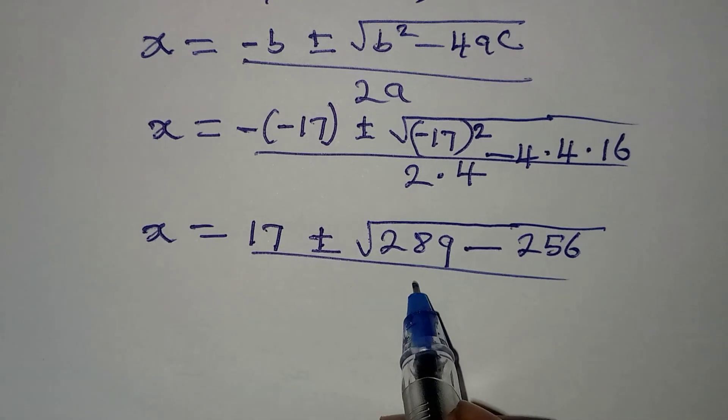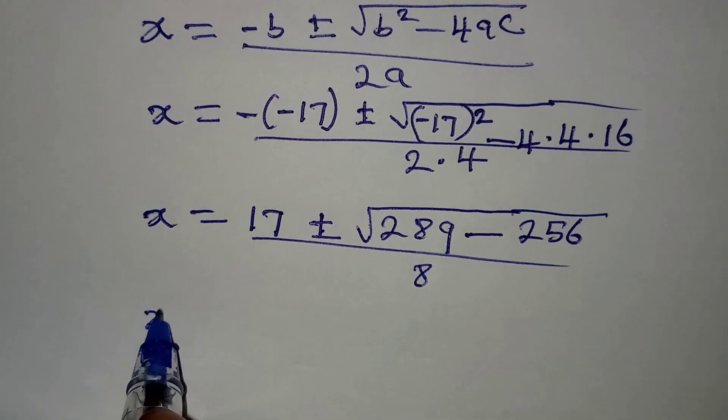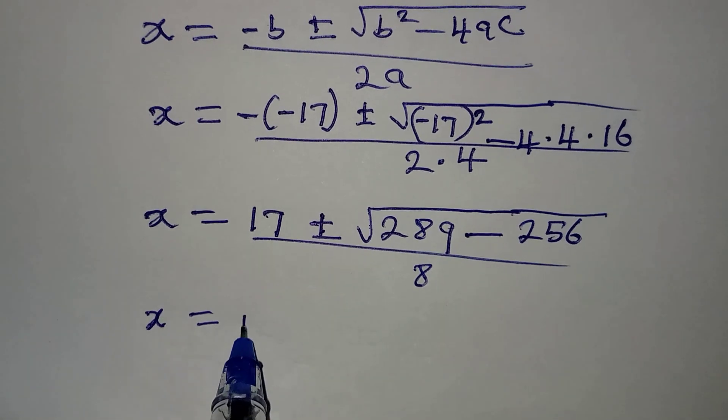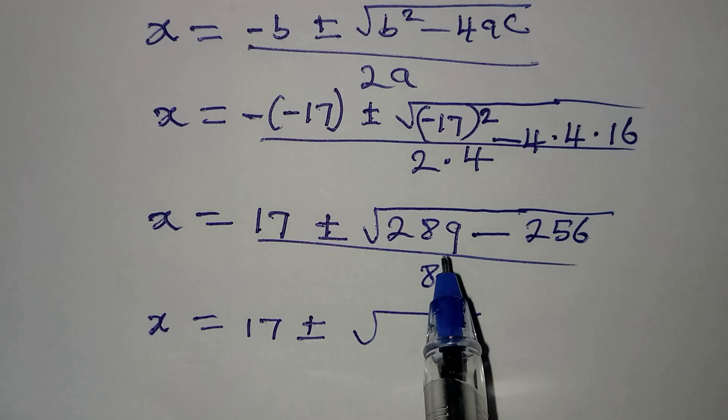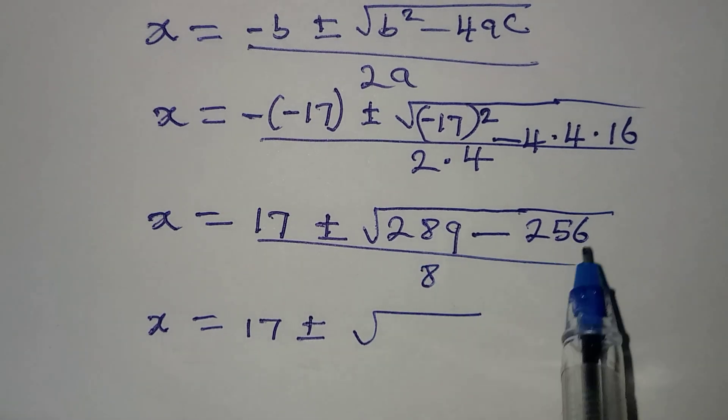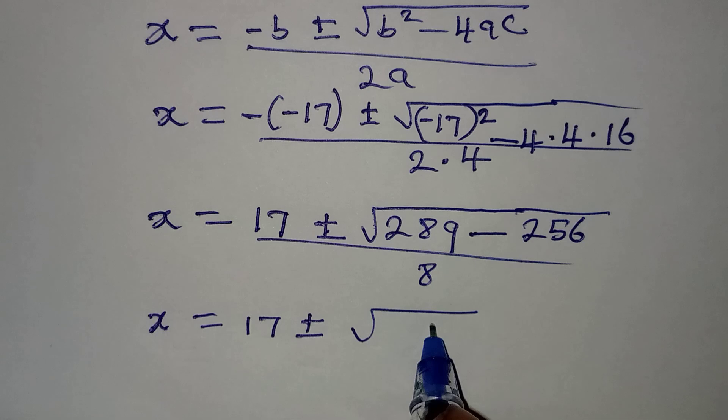This means x = 17 ± √(289 - 256) over 8. 9 minus 6 gives 3, then 8 minus 5 also gives 3, then 2 minus 2 is 0. That's what we have there over 8.